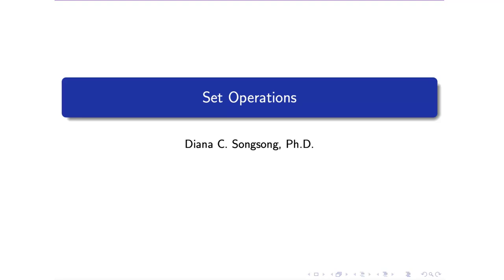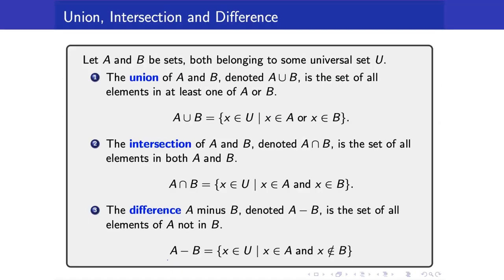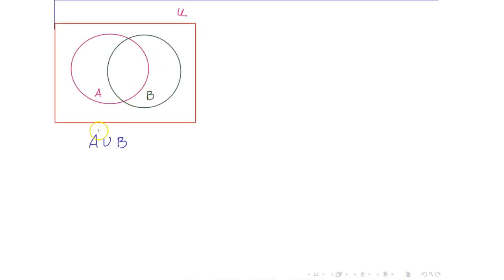In this lesson, we are going to discuss set operations. Suppose that A and B are sets, both belonging to some universal set U. The union of A and B is the set of all elements in at least one of A or B. So therefore, you belong in the set A union B if you belong in A or you belong in B.